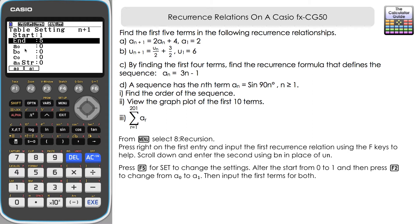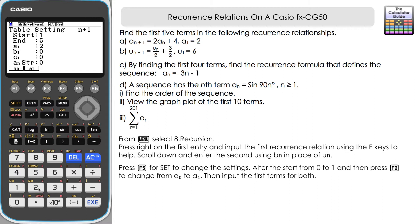The second thing to alter is how we're referring to the first term. By default it's set to 0; we want to change that to A₁. We're given A₁ = 2 as the first term of the first sequence, and B₁ = 6, which is our U₁, so the second sequence has a first term of 6.